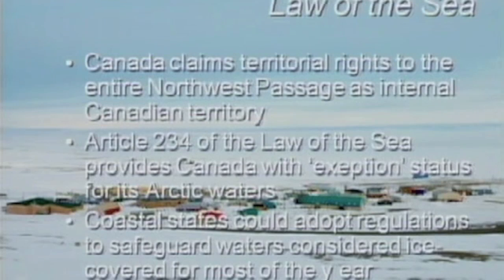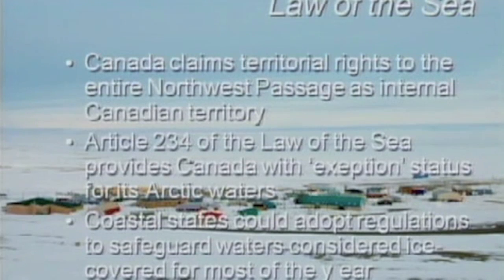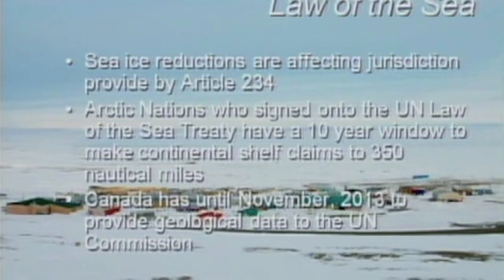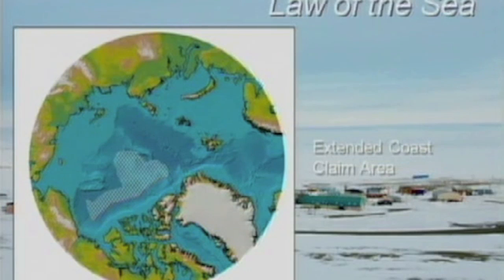Briefly, the law of the sea. Canada claims territorial rights to the entire Northwest Passage as internal Canadian territory. There's an article in the law of the sea that gives Canada exception status for its Arctic waters, and coastal states can adopt regulations to safeguard waters ice-covered for most of the year. Sea ice reductions are affecting the jurisdiction provided by Article 234. Arctic nations who signed the UN Law of the Sea have a ten-year window to make continental shelf claims, and that expires in 2013 for Canada.